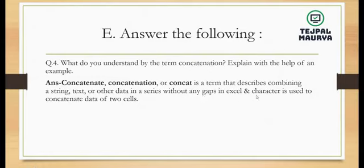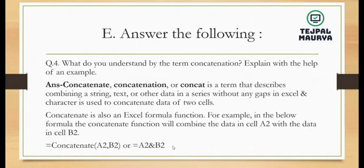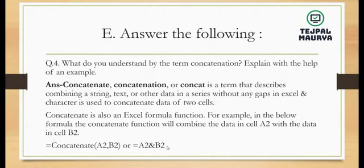In Excel, the AND character (ampersand &) performs concatenation. For example, =A2&B2 means combine the data of A2 and B2. The ampersand operator will combine the data of both cells. Let me show you how this works in Excel so it becomes clear to you.